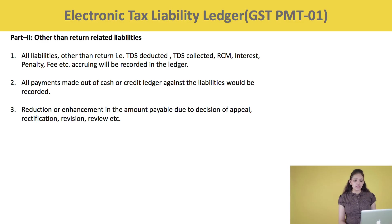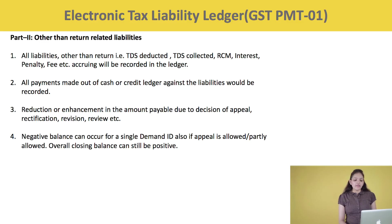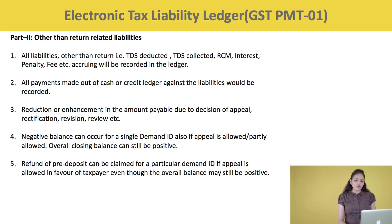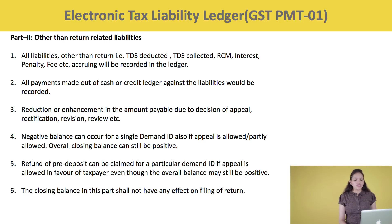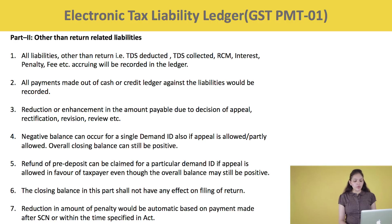Reduction or enhancement in the amount payable due to a decision of appeal, rectification, revision, or review will also be reflected. A negative balance in this part can occur for a single demand ID if an appeal is allowed or partly allowed, while the overall closing balance can still be positive. Refund of pre-deposit can be claimed for a particular demand ID if the appeal is allowed in favour of the taxpayer, even though the overall balance may still be positive. The closing balance in this part shall not have any effect on the filing of the return. Reduction in the amount of penalty would be automatic based on the payment made after the show cause notice or within the time specified in the act.